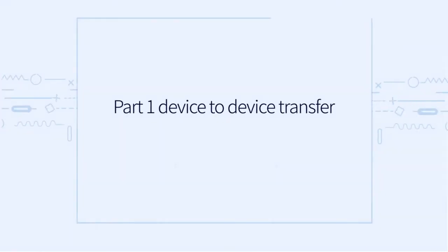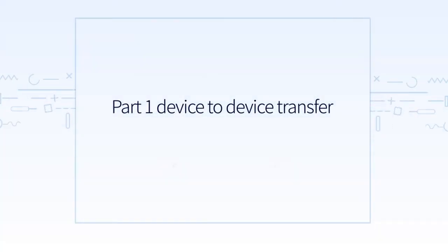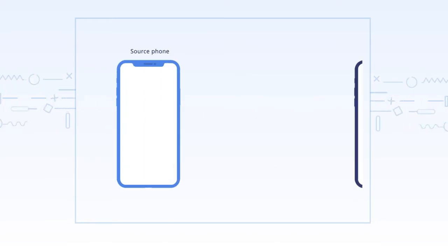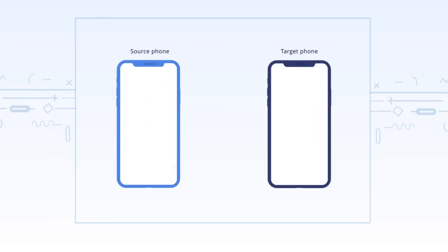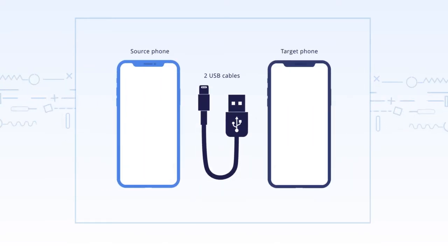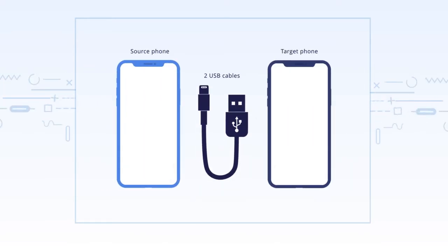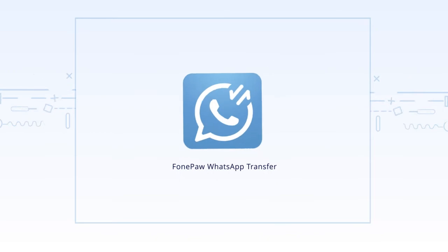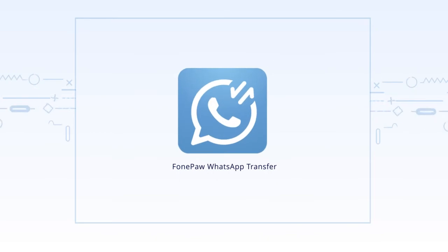Before transferring WhatsApp data, you need to provide a source phone, a target phone, two USB cables, and the PhonePaw WhatsApp Transfer software.